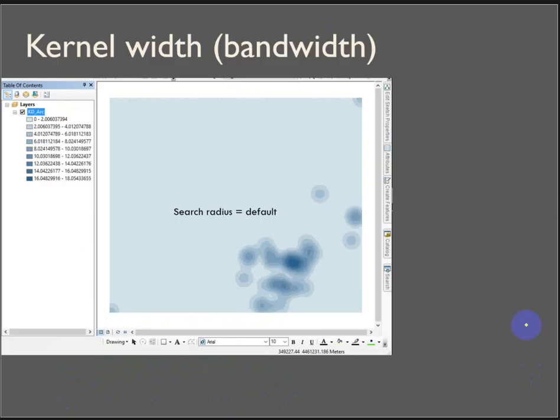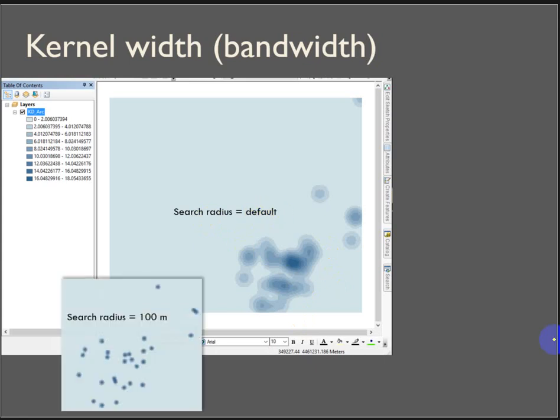So here's the default. Here we've got a set of points. I ran kernel density, and we got a density surface out of some points using the default search radius. I went in and manually changed the search radius to 100 meters. And you can see here, we just got a little tiny density output around each point's location.